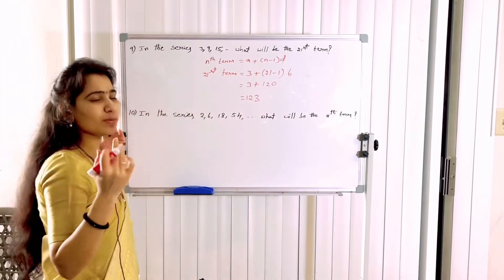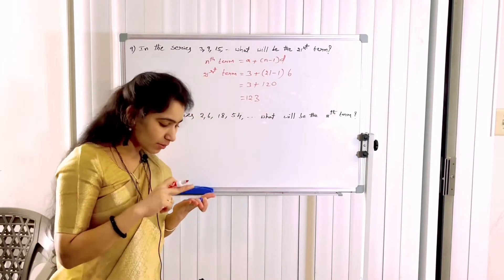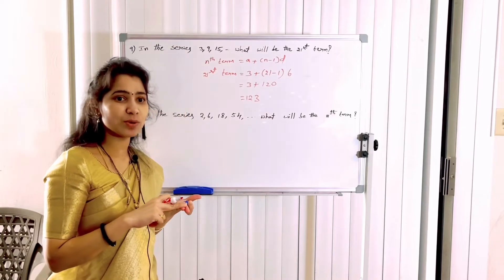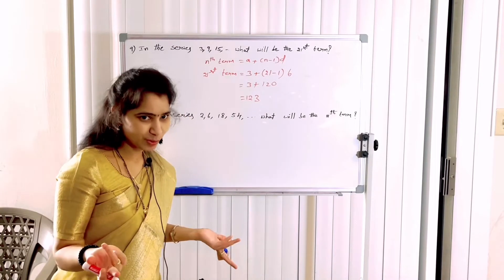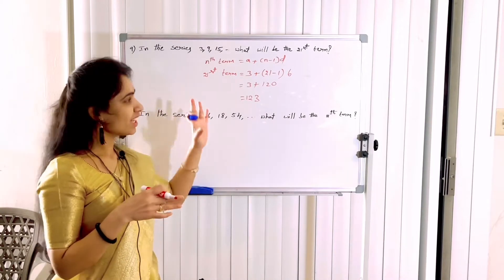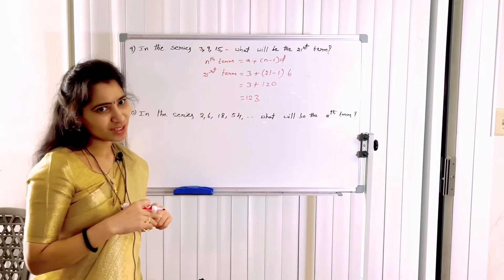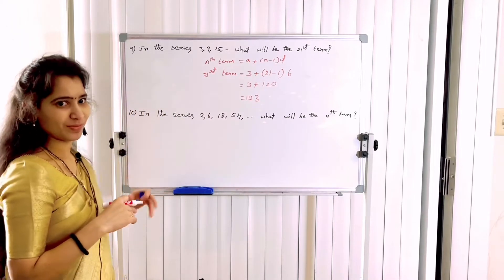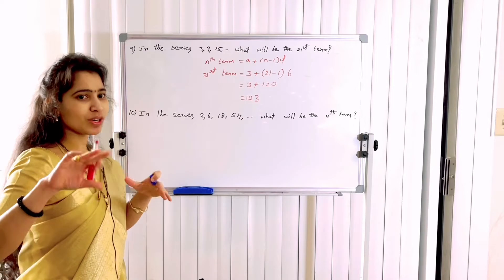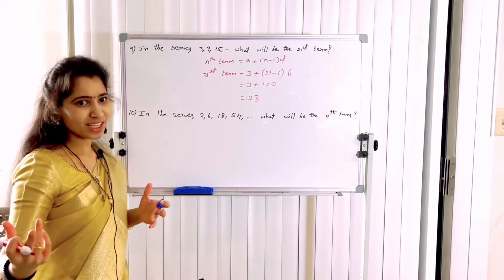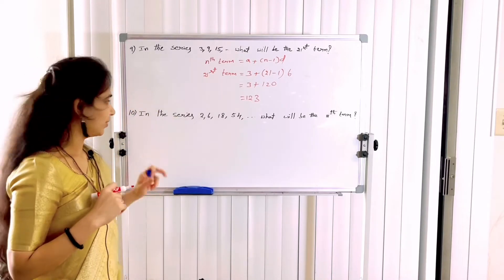So we can simply find it out. Identify whether the given series is Arithmetic Progression or Geometric Progression, find the series type, use the formula, and find out the answer. That's how we find it out easily.